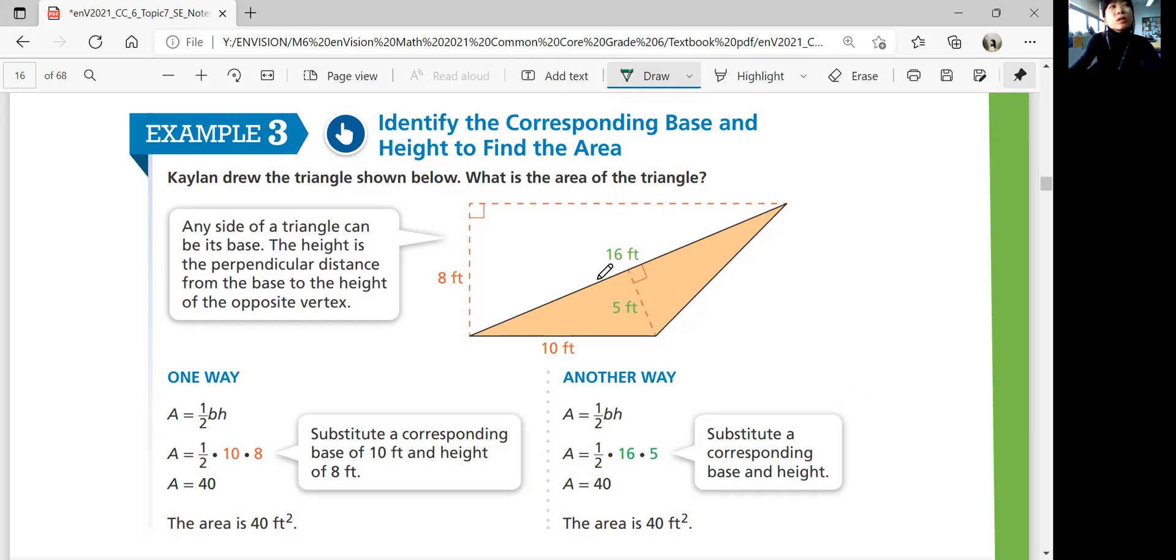So if you chose this side to be the base, 16 feet, that means your height is 5 feet. If you chose this side, the 10 feet to be the base, then your height must be 8 feet. So you have two ways to solve this problem. 10 times 8 divided by 2, or 16 times 5 divided by 2, you're going to get the same answer. The area is 40 square feet if we're talking about an actual triangle.